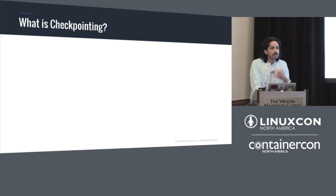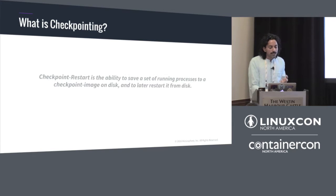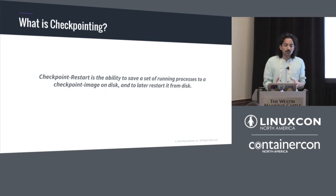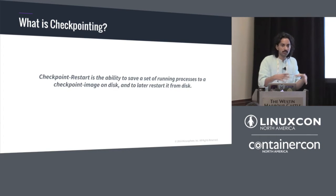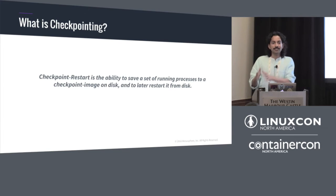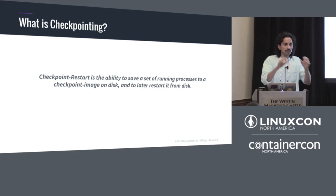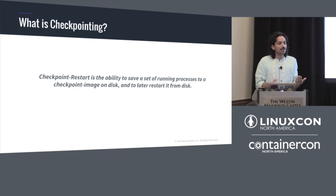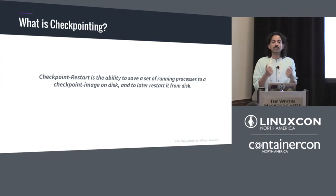In terms of checkpointing, the textbook definition is: checkpoint-restart is the ability to save the state of a set of running processes to disk so you can later restart them. You have a computation running, take a snapshot, and you now have files on disk. Because they are files, you can move them over a network or do all sorts of operations on them, and when it's time to restart, you restore the process state from that snapshot.